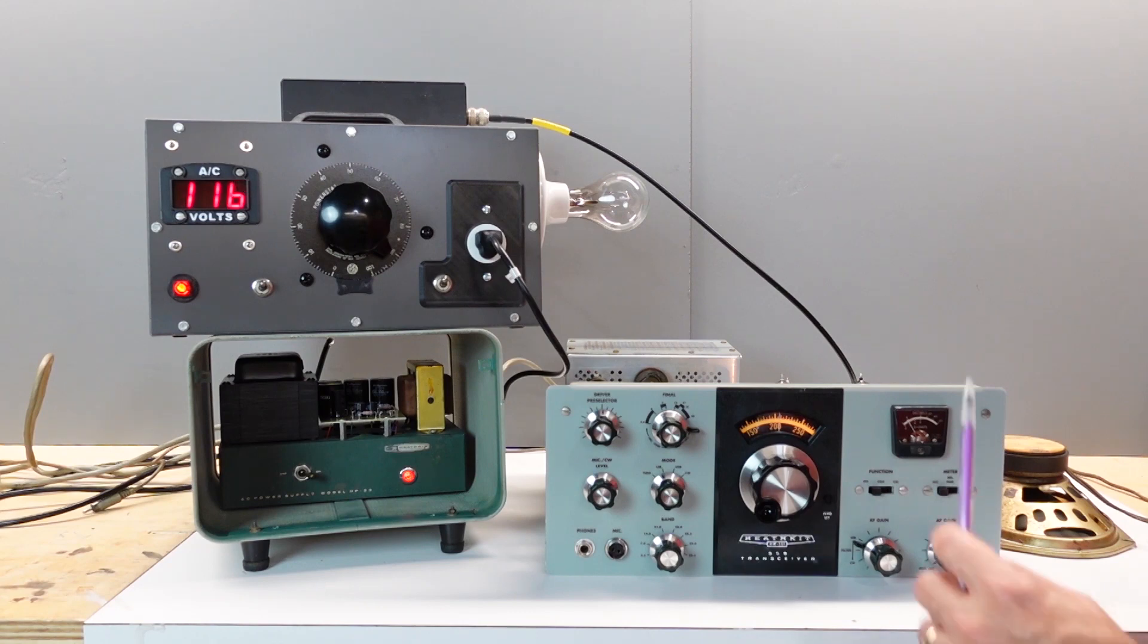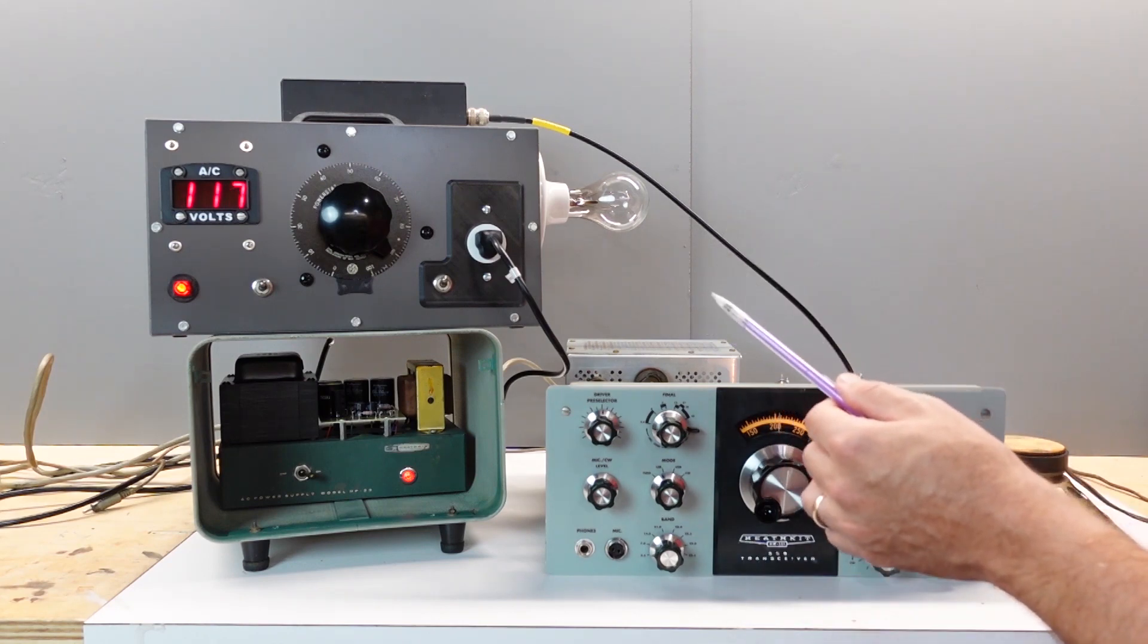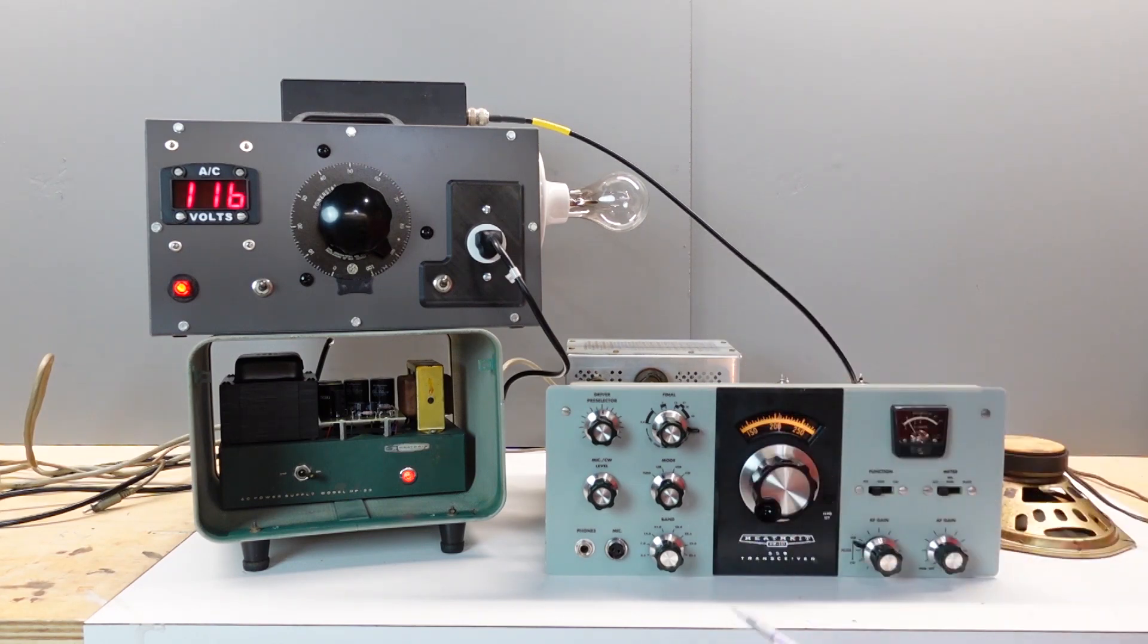Okay, then the next step in the process was to power the unit up through the dim bulb. And I did that and didn't see any issues. The bulb was glowing moderately bright, which made sense because of the amount of current that the power supply should be drawing. Didn't see any other issues that were alarming. So then I switched it over to take the bulb out, ramp the voltage up. And as you can see, I've gotten up to about 115, maybe 117. My meter is not that accurate. So let's just say it's at full line voltage right now and no issues.